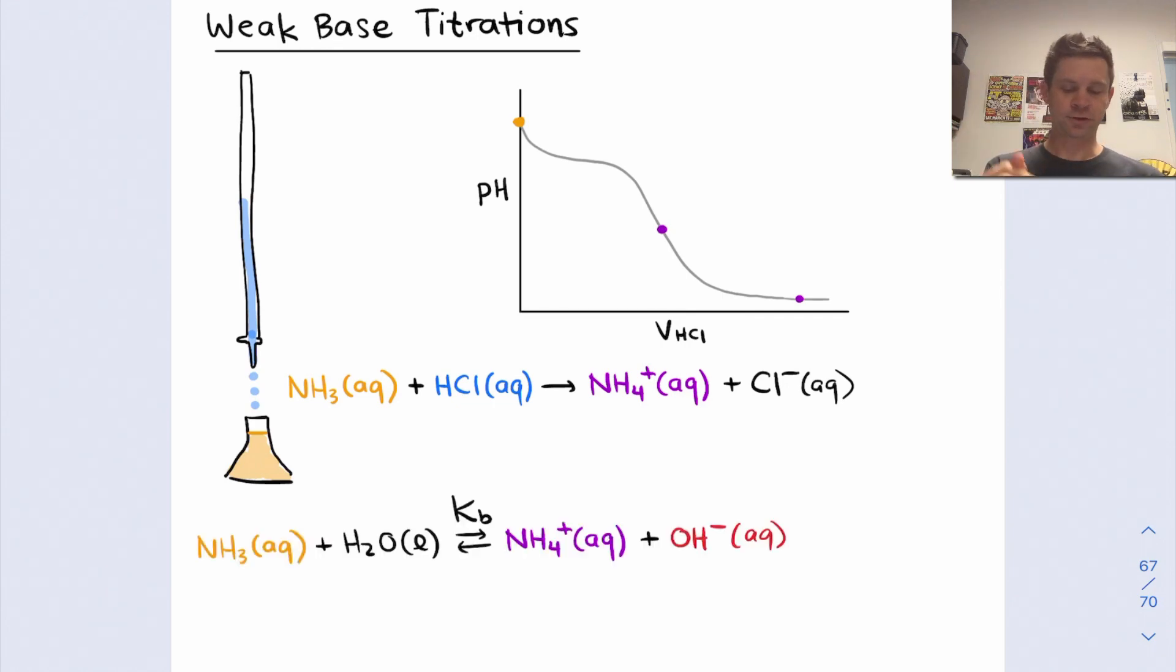Throughout this discussion, the key equilibrium that we want to keep in mind is the base ionization equilibrium. The weak base analyte, here NH3, reacts with water to form the conjugate acid and hydroxide to an extent that's dictated by Kb for the weak base NH3. We'll also have occasion to use Ka of NH4+, particularly when we're thinking about pH calculations where we're interested in the hydronium concentration, although it's also possible to use Kb and think about the hydroxide concentration and then use the relationship between pH and pOH to calculate pH.